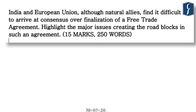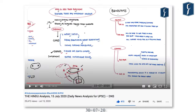Here is an important announcement in our weekly series of mains question assignment from DNS. The question for today's assignment is: India and European Union, although natural allies, find it difficult to arrive at consensus over finalization of a free trade agreement. Highlight the major issues creating the roadblocks in such an agreement. This question is created from the DNS of 15th of July.